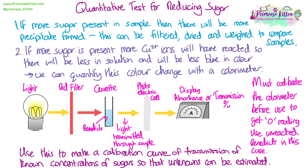We normally calibrate the machine before we use it to get a zero baseline reading. In this case we would use the unreacted Benedict's solution — the blue solution we would start with before we added it to the sugar solution.